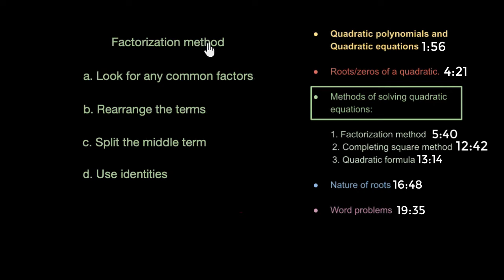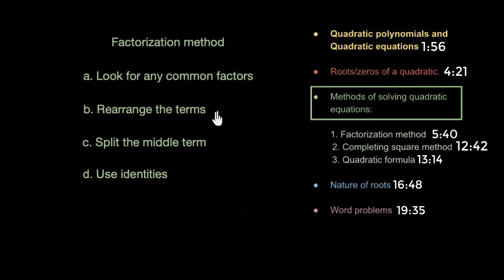Let's start with the factorization method to solve a given quadratic equation — in other words, how we can factorize a given quadratic equation to get to its roots. Whenever you need to factorize, always look out for these four things: look for any common factors in the terms, sometimes rearranging the terms can help, then we have splitting the middle term, and sometimes using identities can also help in factorization.